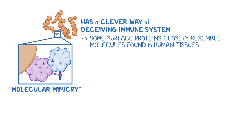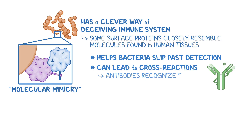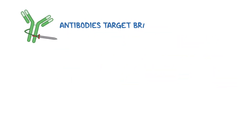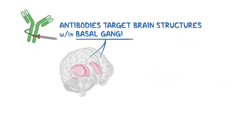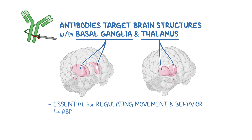On one hand, this defense mechanism helps the bacteria slip past detection. But in some cases, it can lead to cross-reactions, where the antibodies not only recognize strep antigens as foreign, but also mistakenly attack human tissues. In PANDAS, these antibodies target brain structures within the basal ganglia and thalamus, which are essential for regulating movement and behavior, leading to the abrupt onset of neuropsychiatric symptoms.